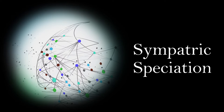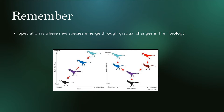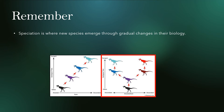Hello everyone. For this segment of the module we'll be looking at sympatric speciation. Just a few reminders: speciation is where new species emerge through gradual changes in their biology, and the evolutionary process results in the formation of new species from old forms.